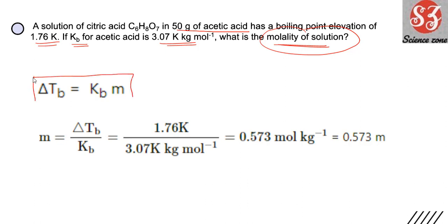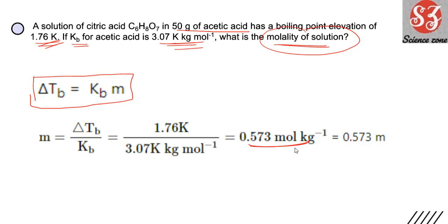Also: ΔTb = Kb × m, where m is molality. Therefore m = ΔTb / Kb. If ΔTb and Kb are given, simply divide to get molality.